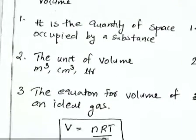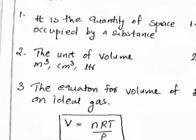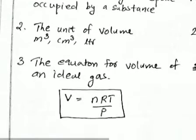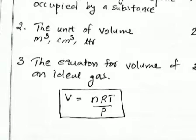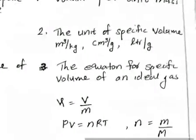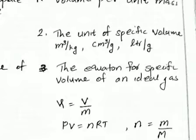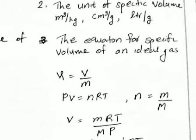The third difference is the equation of volume for an ideal gas. We know the ideal gas equation PV = nRT. From that equation we can rearrange: V = nRT / P, where n is the number of moles, R is the universal gas constant, T is the temperature, and P is the pressure.